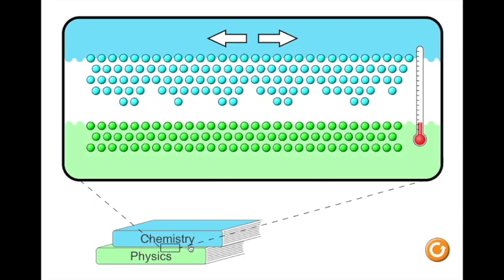The blue dots on the screen represent the particles on the surface of the chemistry book, while the green dots model the surface particles of the physics book. Currently in the top screen, the two book surfaces are not touching.